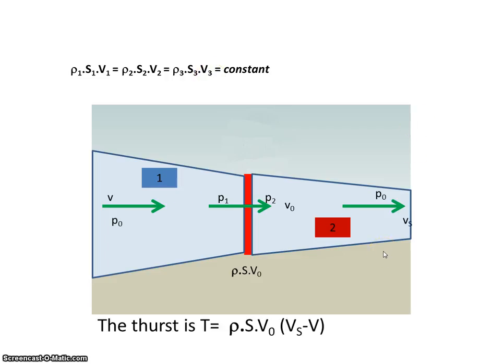So I can say that the thrust T is mass times acceleration. So the mass of the air going through the disk is ρ·S·v₀ and the acceleration is velocity of the air out here in the slipstream subtracting the velocity of the air over here in the free stream. So that's the thrust produced by the propeller.